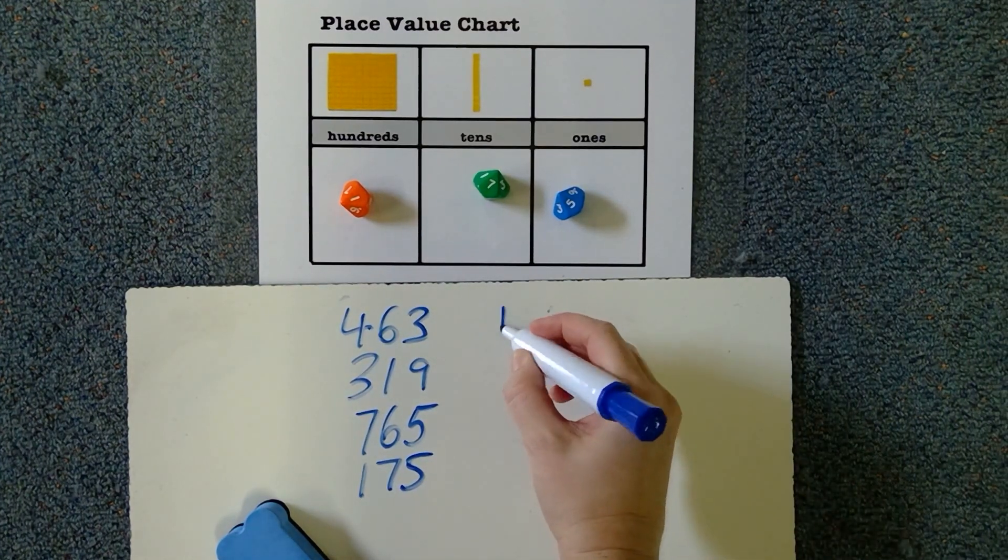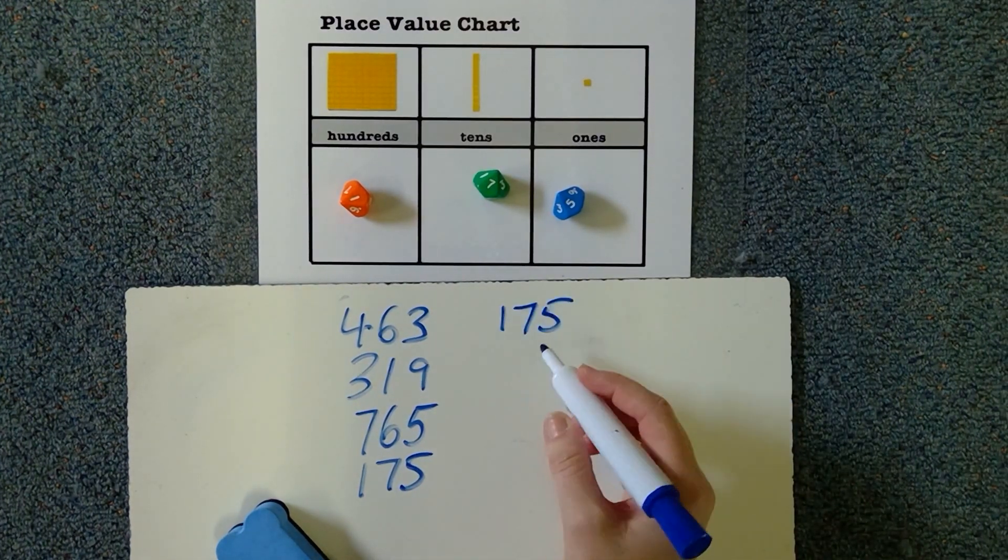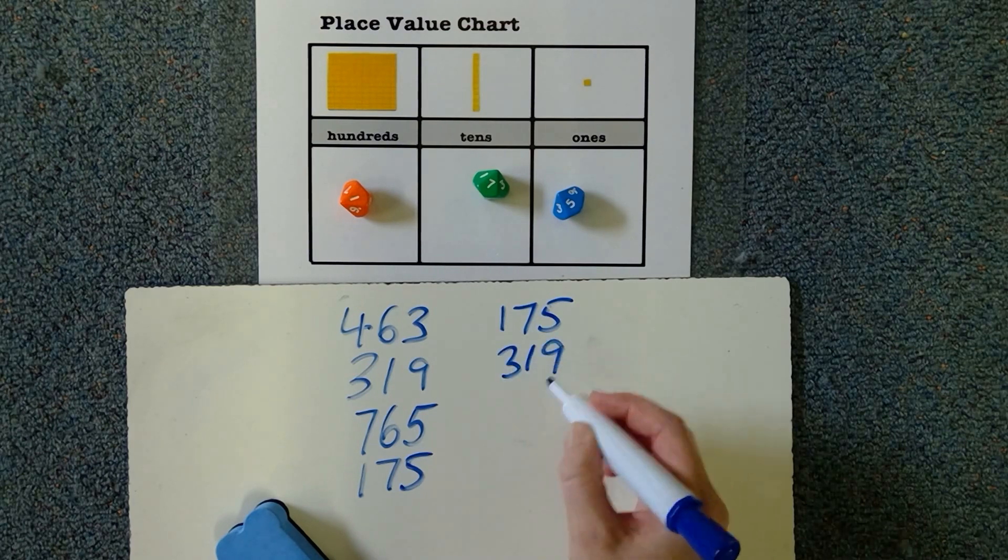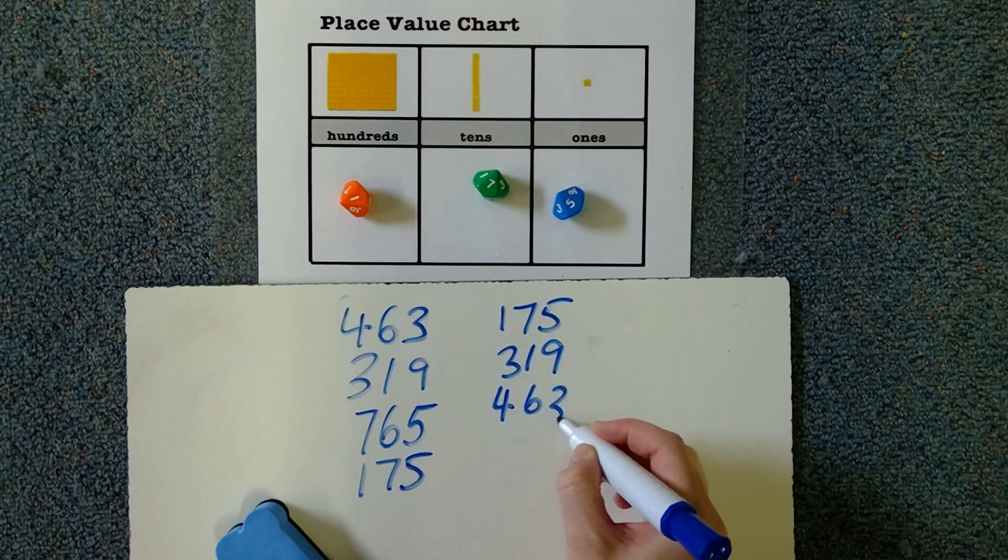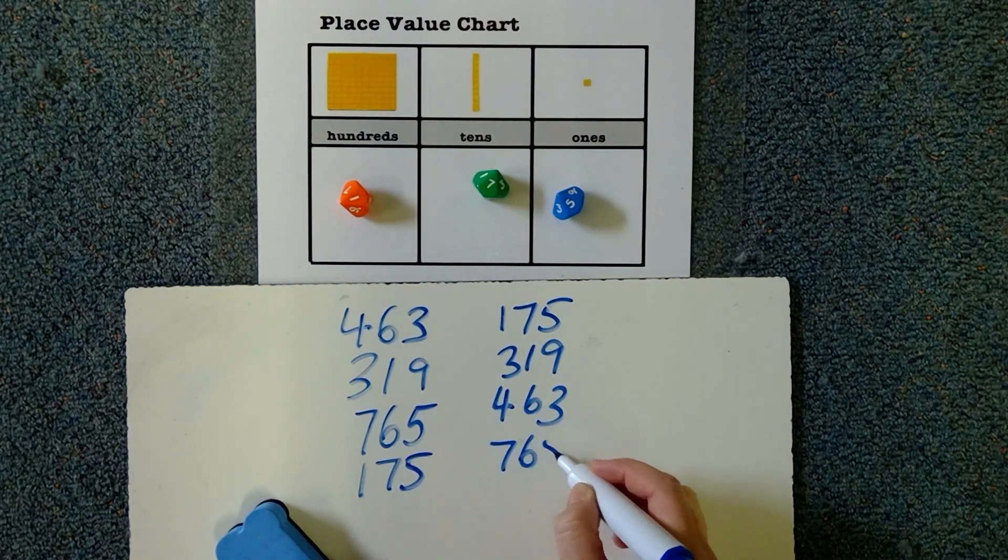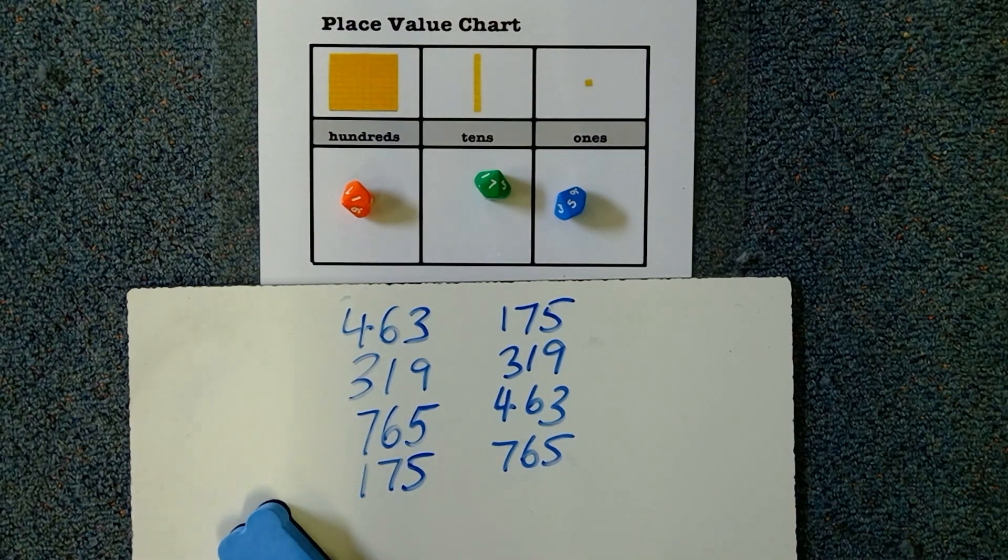Okay guys, you should have had 175, 319, 463, 765. Good job, good job guys, I hope you got them all right. We're gonna do another one with thousands in the next video, so make sure you go to Clever Pickles and check out the other videos there. Thanks, bye!